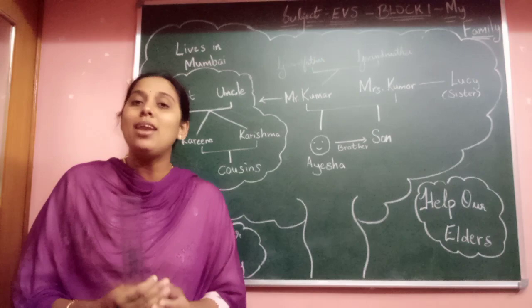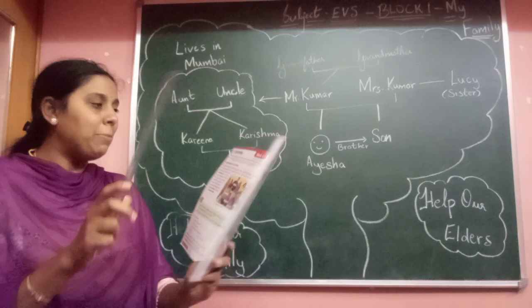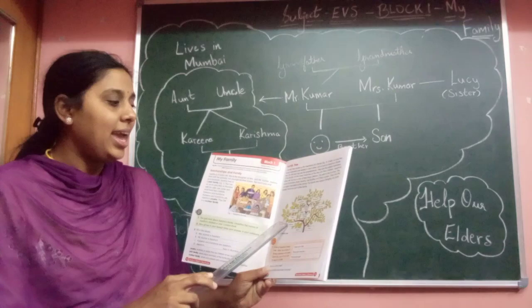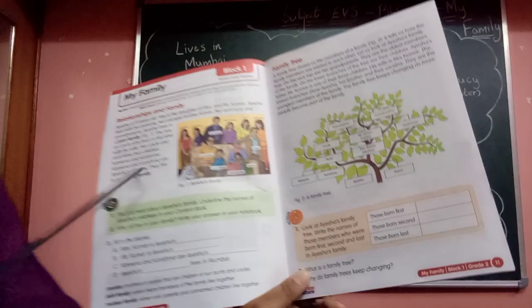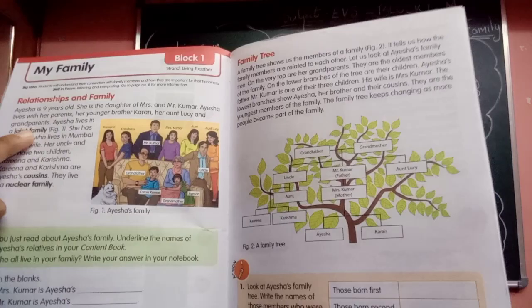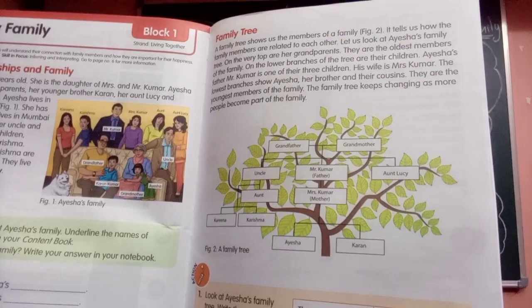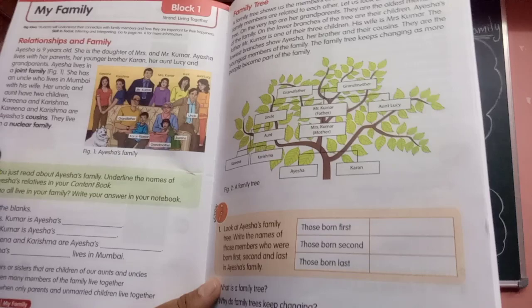Family is where we show love and care for each other. I want all of you to read this lesson 'My Family' — turn to page number 10, Block 1. Read the lesson word by word and underline the words in bold. Practice writing those words — like 'joint family,' 'nuclear family,' 'cousins' — at least 3 to 5 times in your homework book.